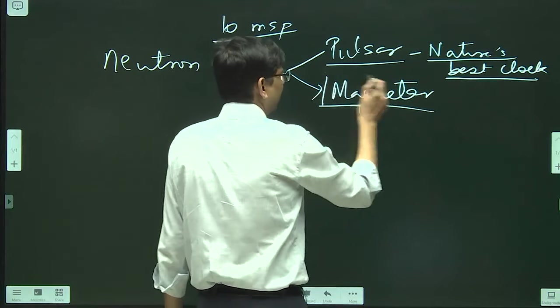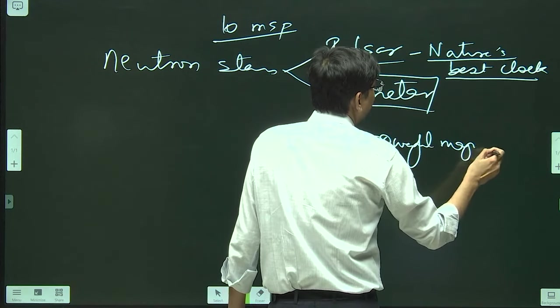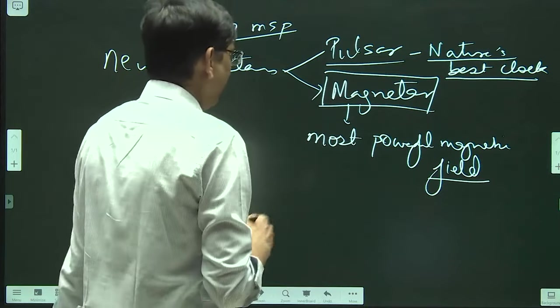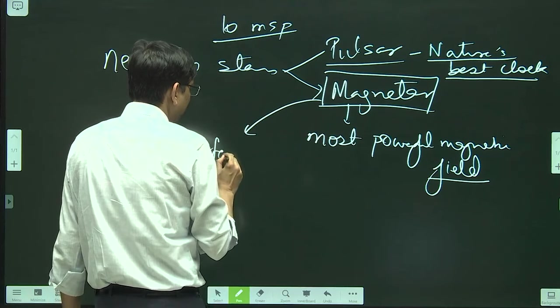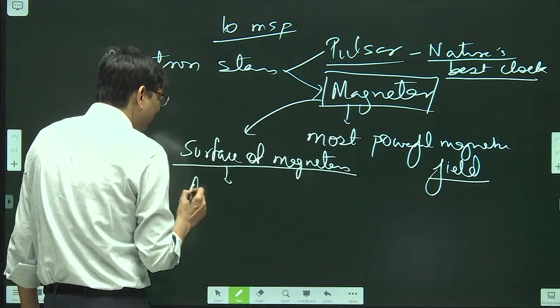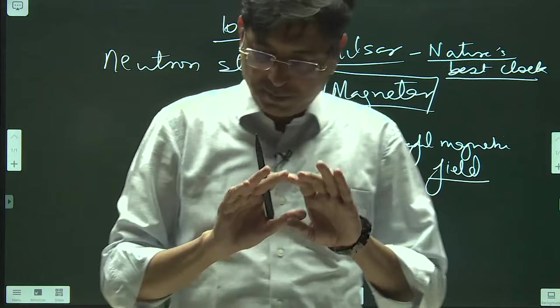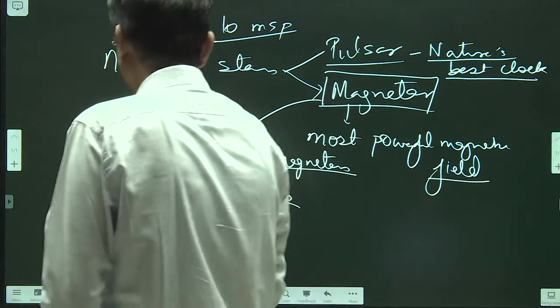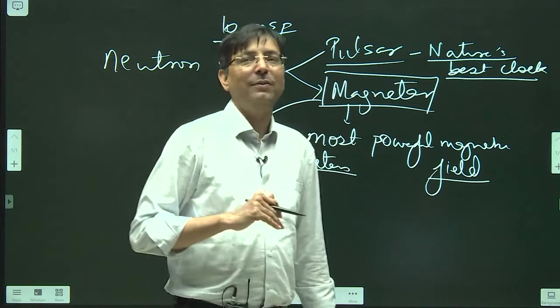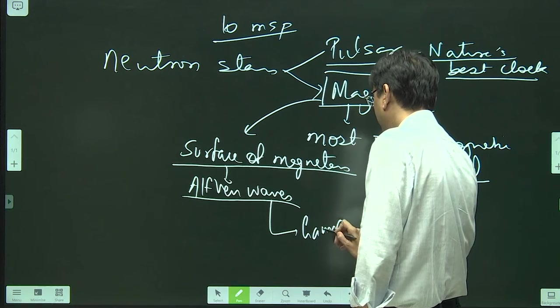Magnetars are the neutron stars with the most powerful magnetic field. On the surface of magnetars there are Alfven waves, and these Alfven waves are because of the disturbance in the magnetic field. When there is a disturbance on the surface of a magnetar, it results in the formation of the waves called Alfven waves, and these Alfven waves are associated with gamma ray bursts.